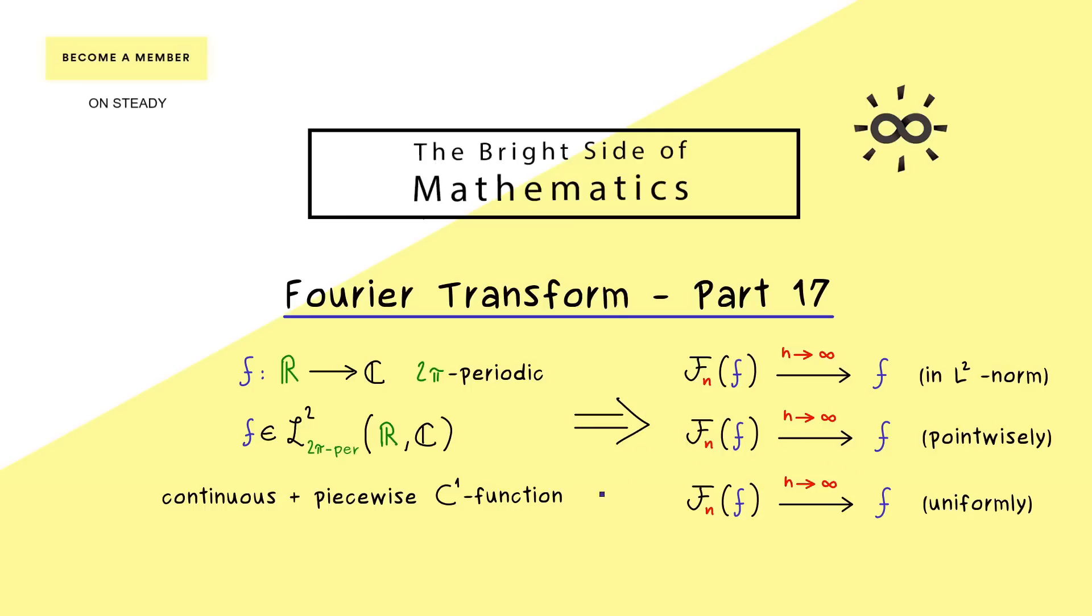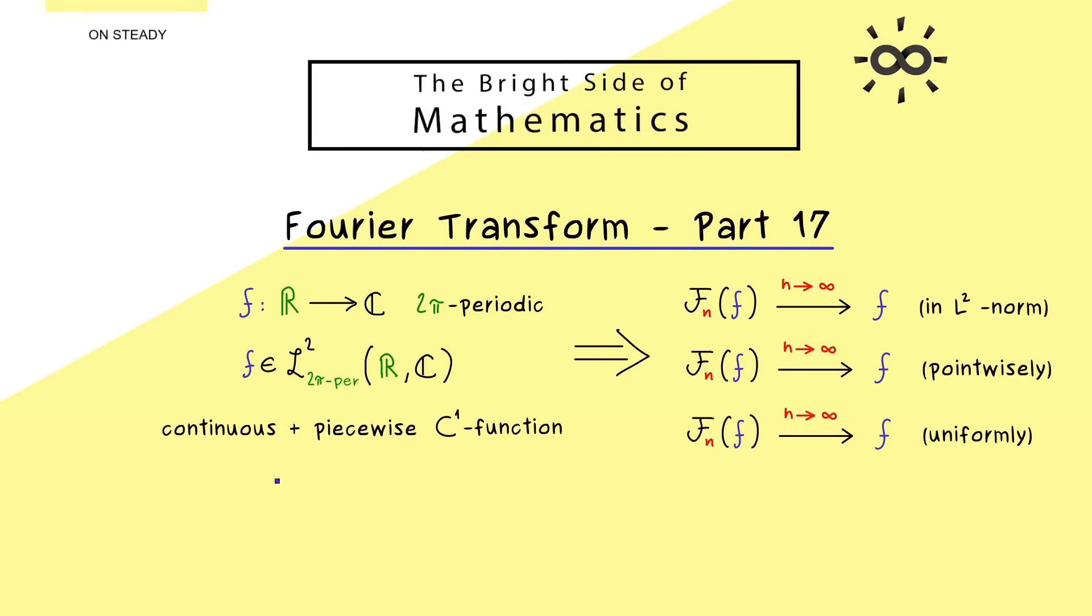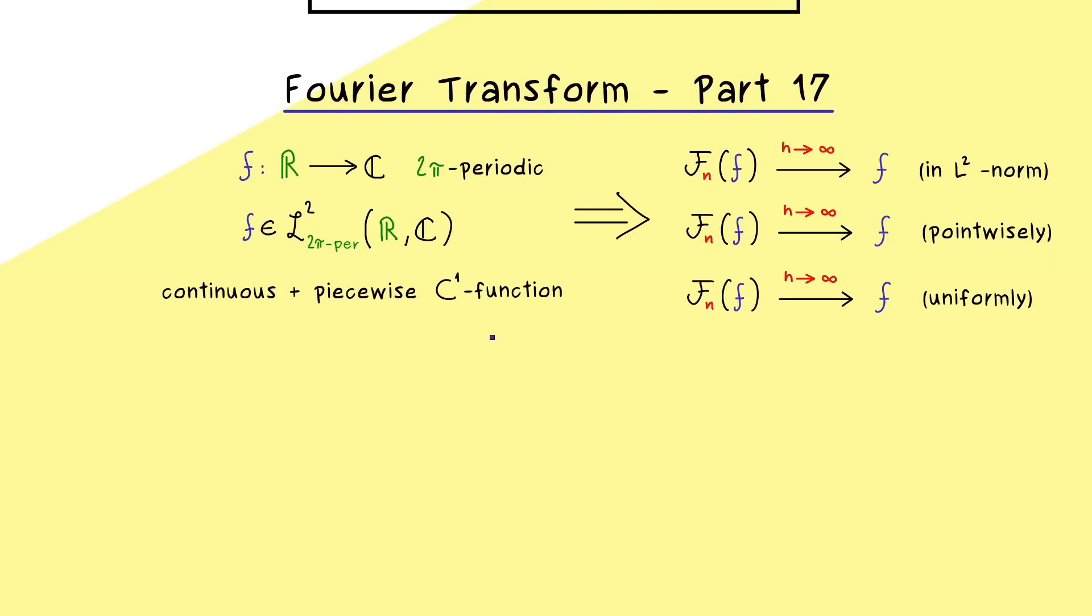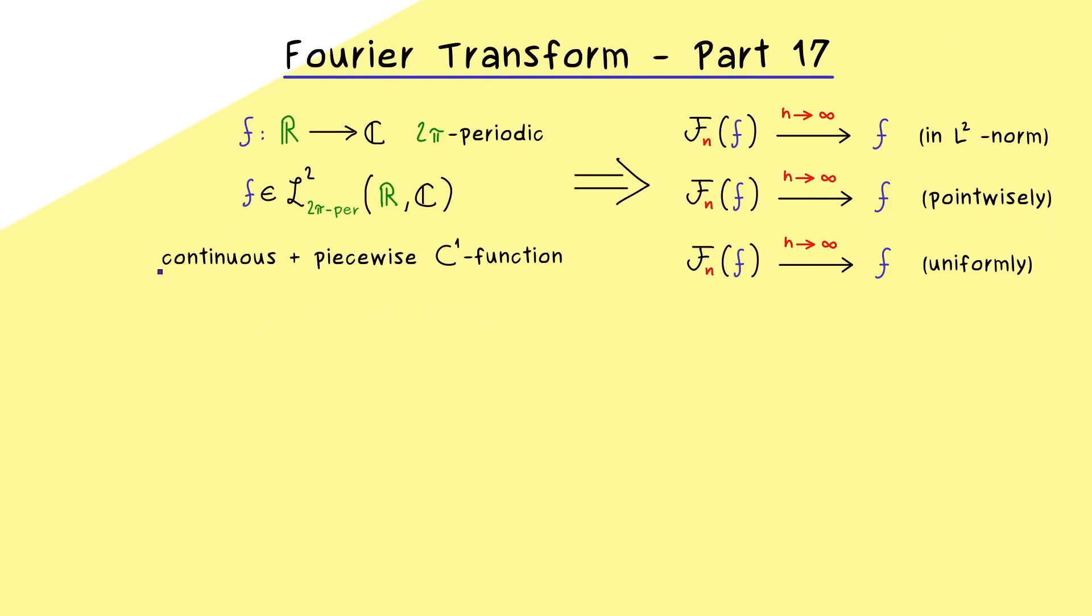However, if we only want to talk about pointwise limits, we don't need the whole uniform convergence and we can weaken the assumptions. In today's video we will see that both the continuity and the C¹ property can be substituted by a weaker form. This means we will also be able to say something about functions with a jump.